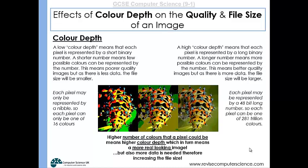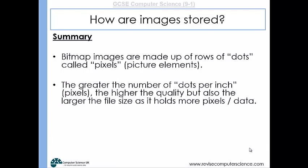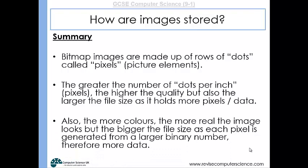Because you've got longer binary numbers for each pixel, that means more data in the file and therefore a larger file size. In summary, bitmap images are made up of rows of dots called pixels. The greater the number of dots per inch, the higher the quality, but also the larger the file size as it holds more pixels and therefore more data. Also, the more colours available, the more real the image looks, but the bigger the file size as each pixel is generated from a larger binary number.